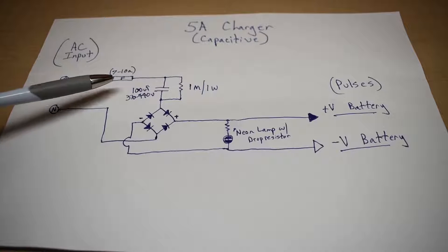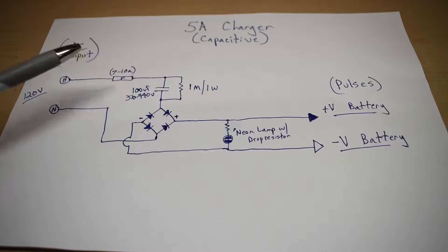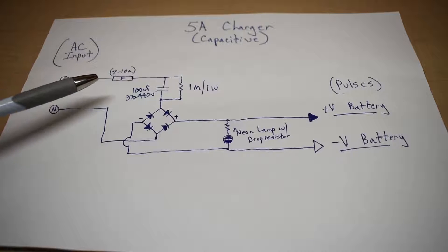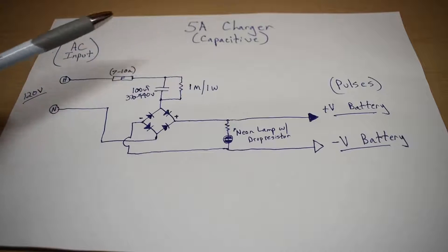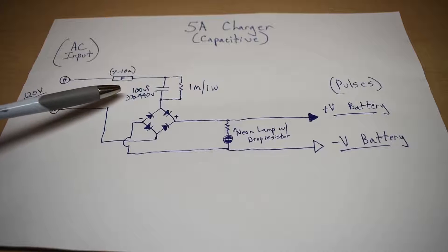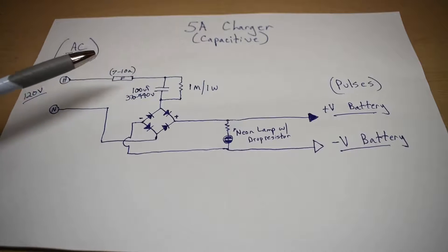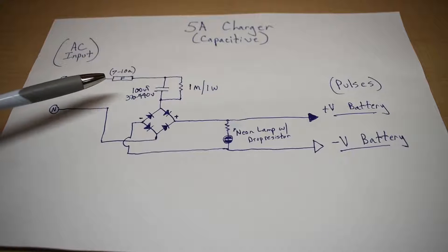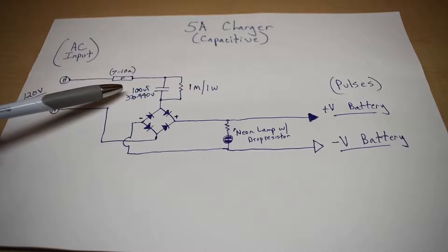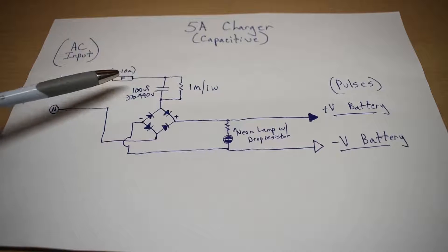Now this is going to have an effective output between 4 and 5 amps of current into your 12 volt battery. If you would like to have a 10 amp charger, you would make this 200 microfarads, and if you'd like a 1 amp charger for a very small battery like a scooter or a jet ski, then you would reduce this value all the way down to 20 to 25 microfarads. That would give you approximately a 1 amp charging output.